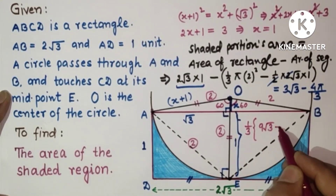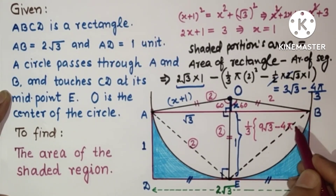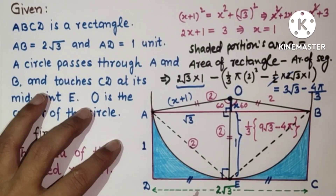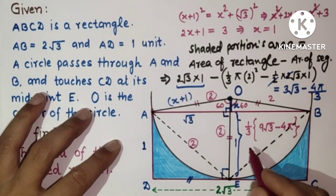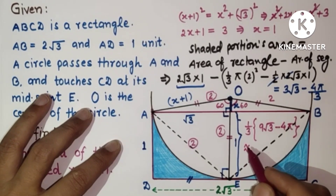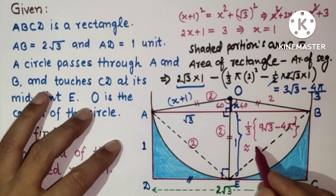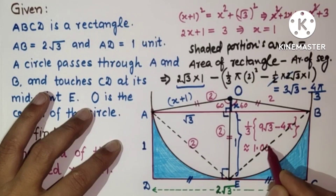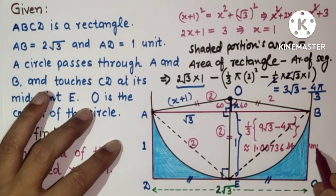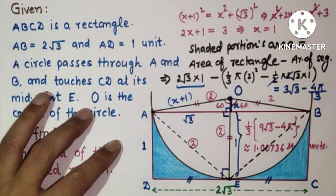Simplifying, 3√3 − 4π/3 gives approximately 1.00736 square units. This is the final answer.